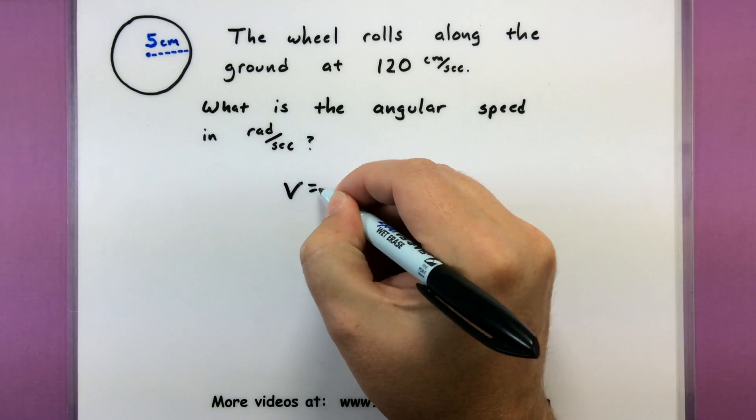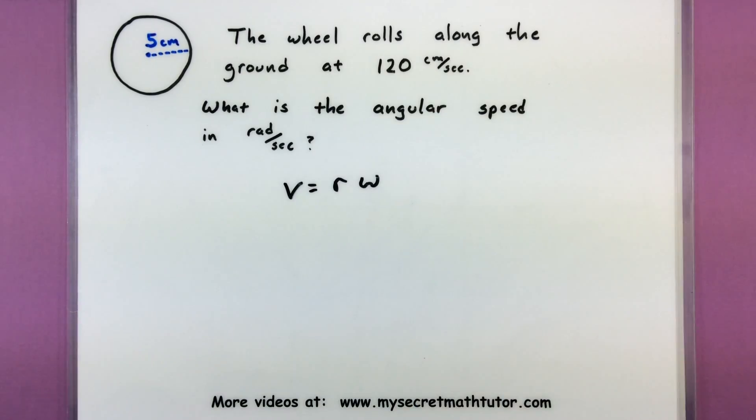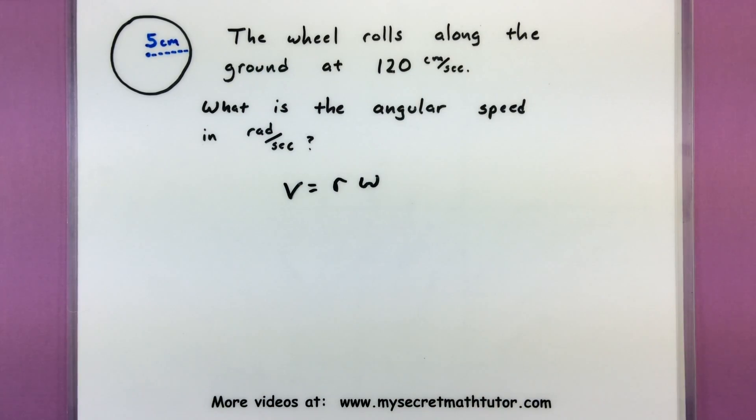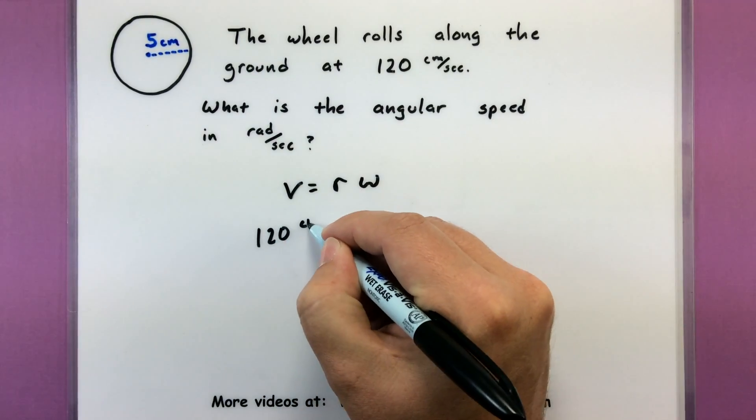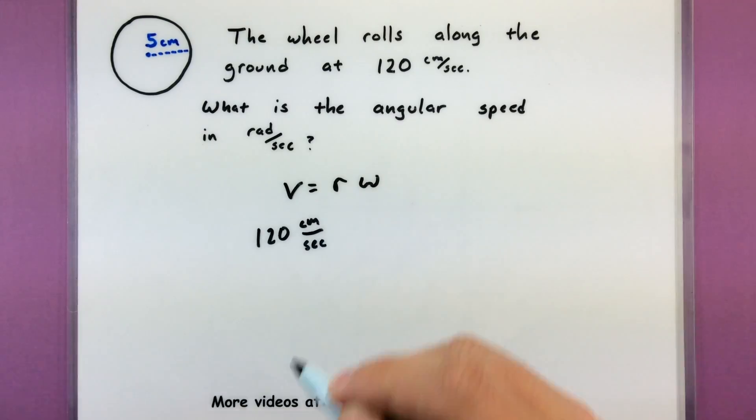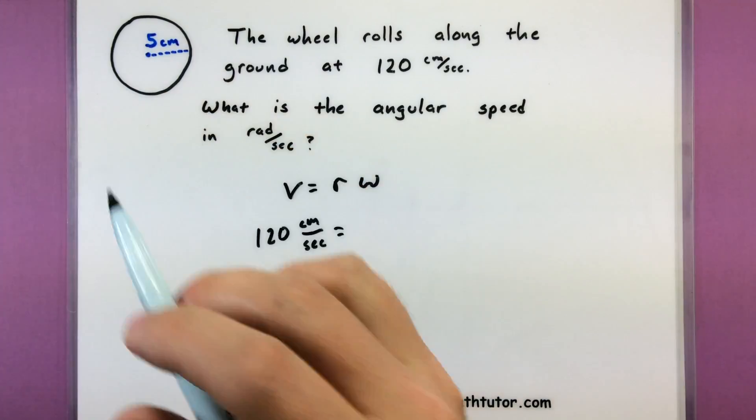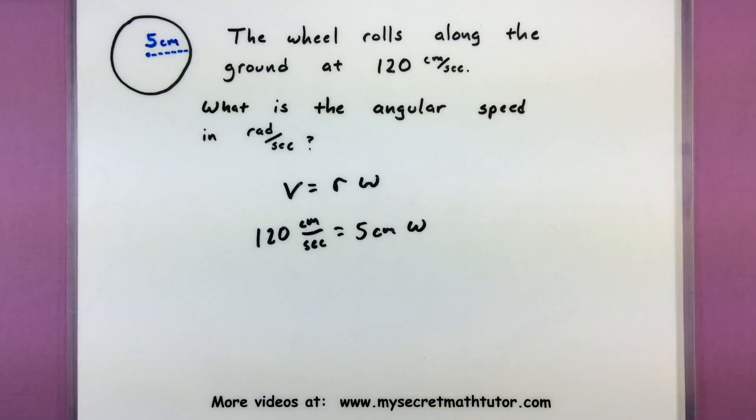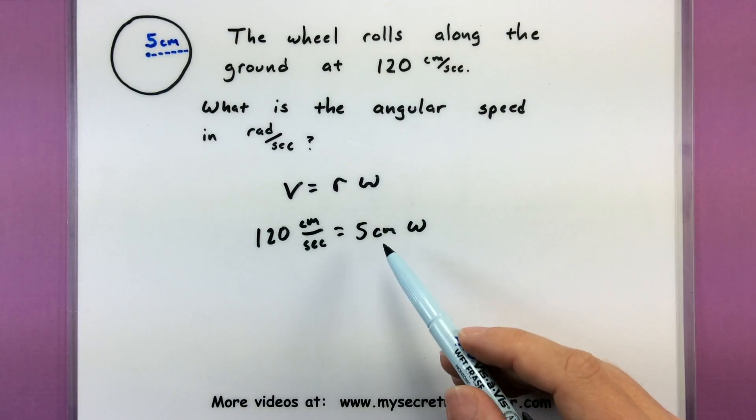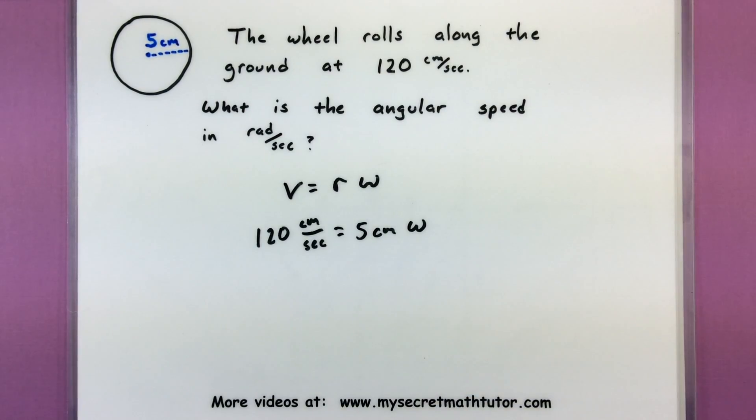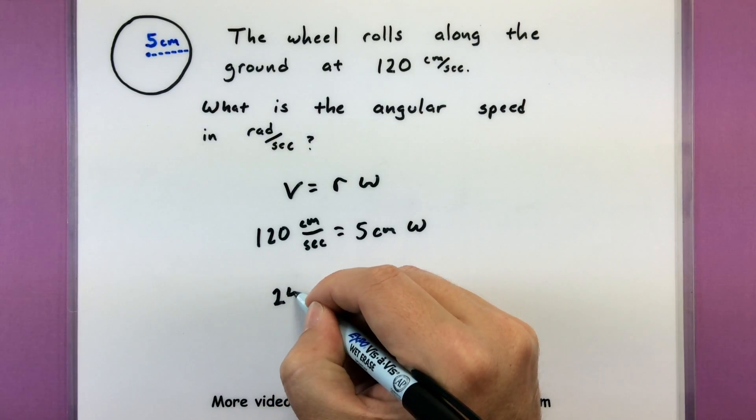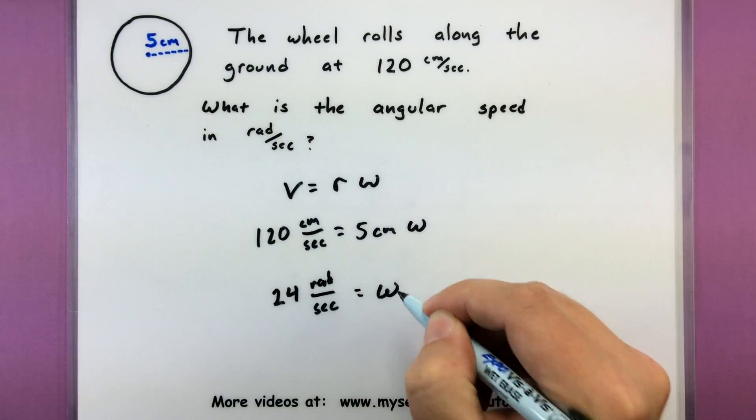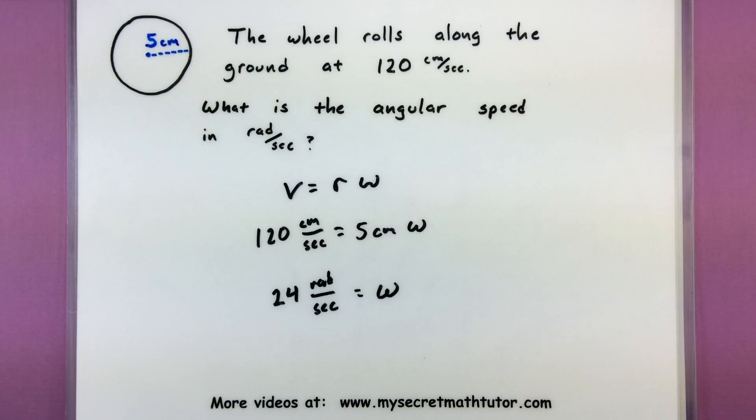So linear speed equals the radius multiplied by the angular speed. So the linear speed would be the speed that it's rolling across the ground, so this is my 120 centimeters for every second. The radius comes from my diagram, looks like it's just five centimeters. And what we don't know is we don't know that omega. I'm not really sure what its angular speed is. Well let's go ahead and divide both sides by five centimeters and this will give us 24 radians per second. Not bad, see nice simple and easy.